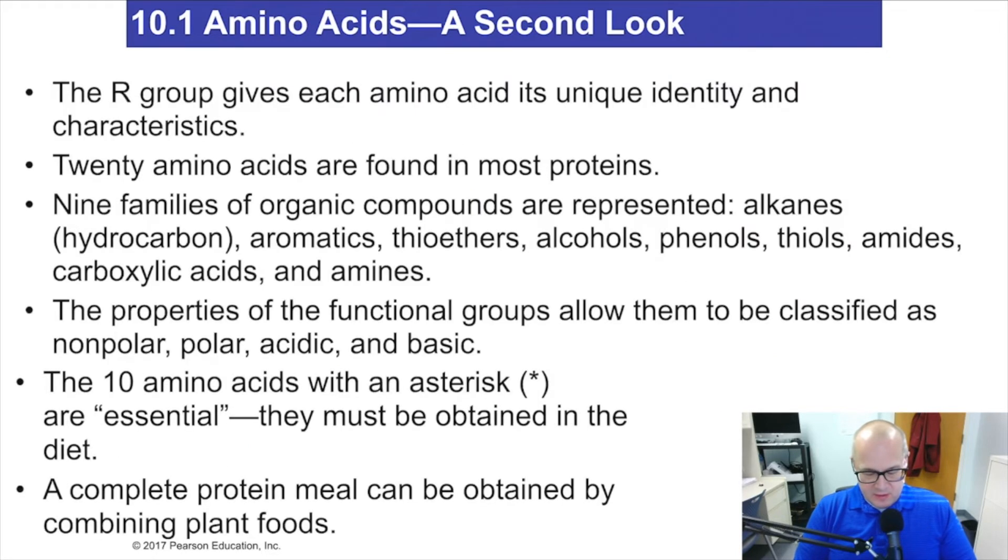Now, there are 20 different naturally occurring amino acids found in most proteins. There's 20 different ones. And they're only different at the R group. They're only different there. Everything else is the same. The amine, the carboxylic acid, and the alpha carbon. They're all there. It's different at the R group.